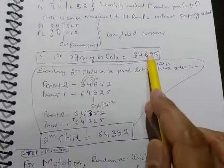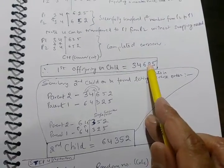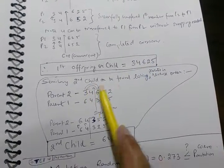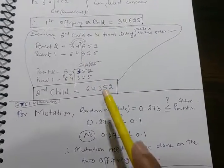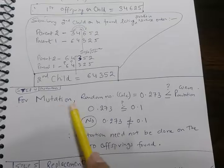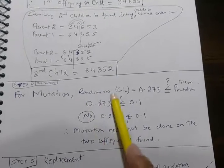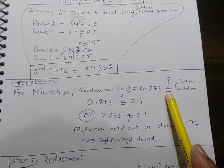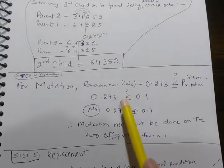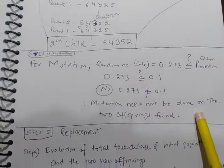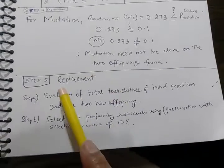This is how we have produced an offspring - this is the first child. Similarly we can produce the second child. After producing the two children, let's check if mutation can be done. We generate a random number. It is not less than the mutation probability, so we are not going to do any mutation.